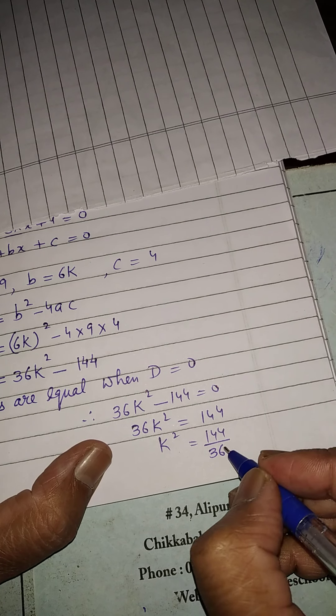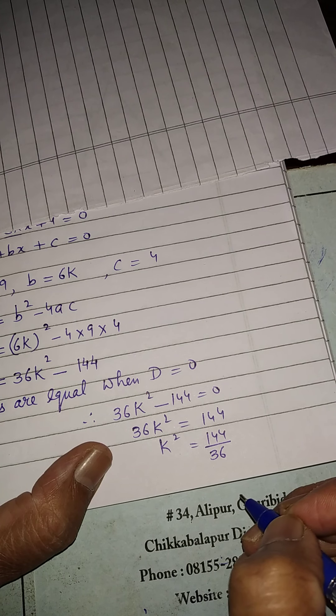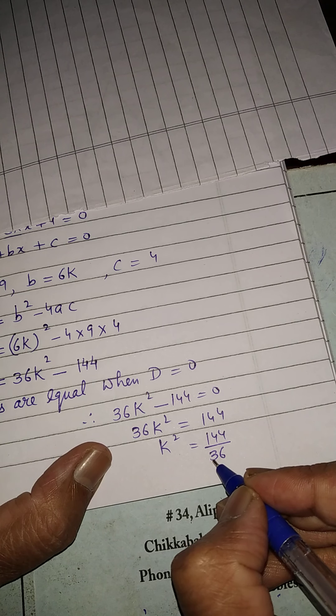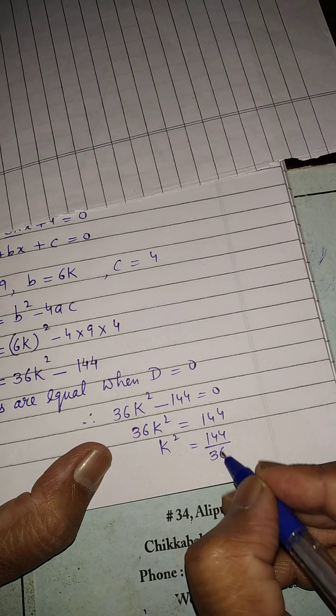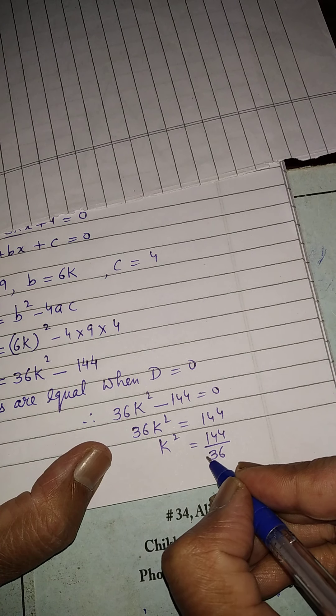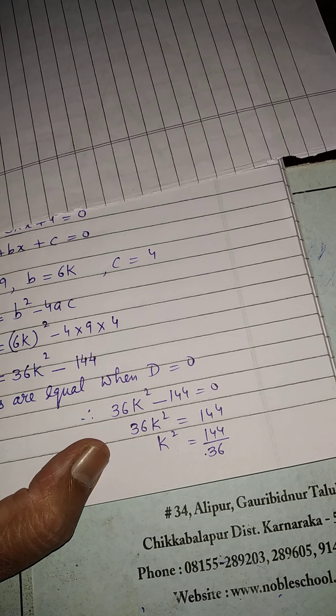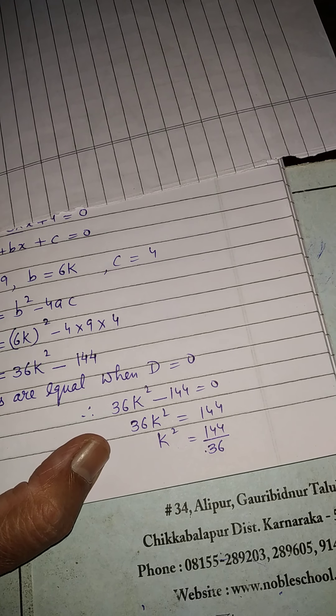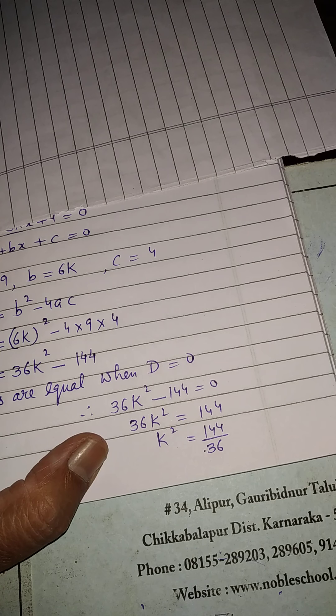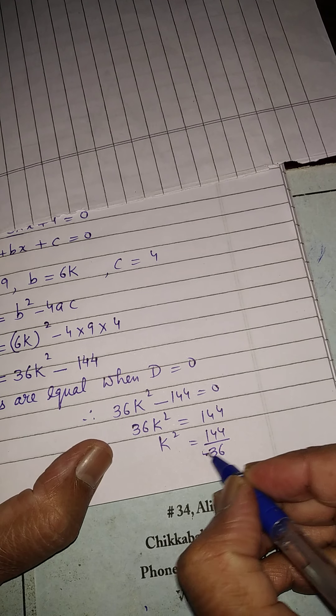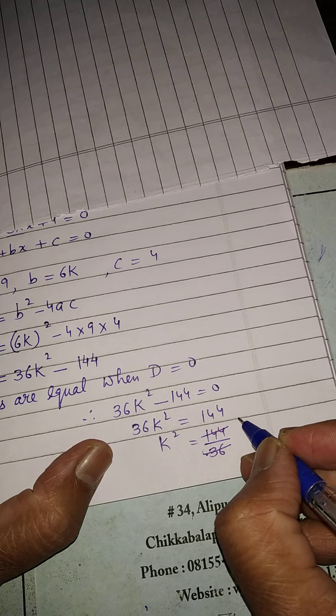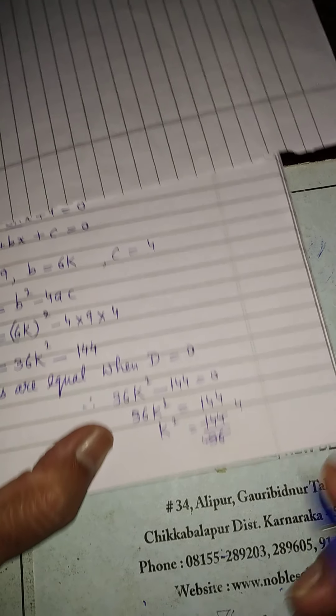So, 36k square is equal to 144 and k square will be equal to 144 upon 36. It will go on how much? Can you tell? If you cancel it, it will go on 4.